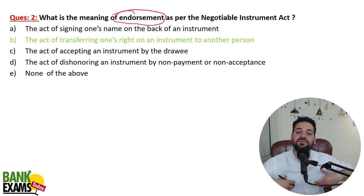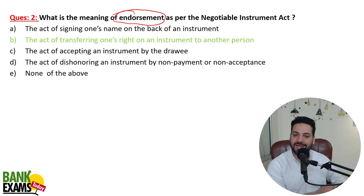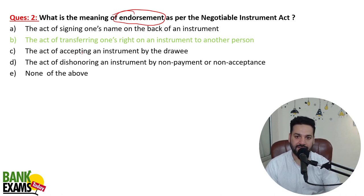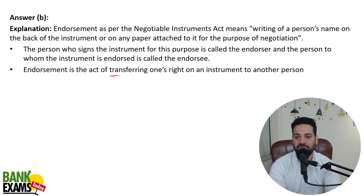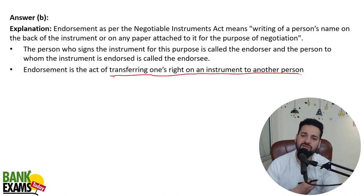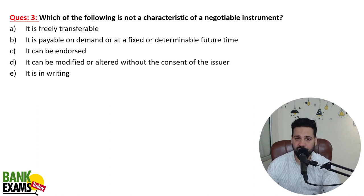The right to receive the money on the cheque — whatever is written on the cheque — when you endorse it, it means the payment should go to the other person, not to you. You have written someone else's name on it, endorsed it. So endorsement is the act of transferring one's right on the instrument to another person — transferring the right to receive cash to someone else.